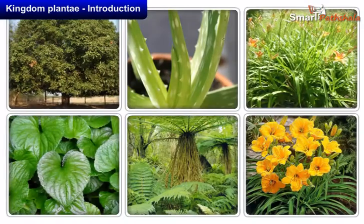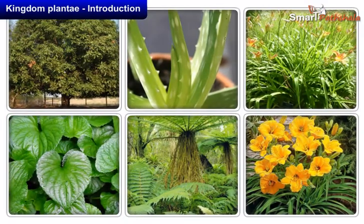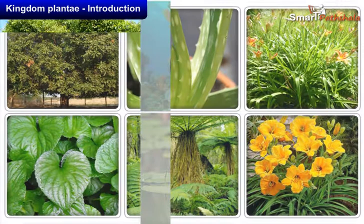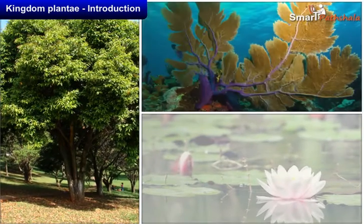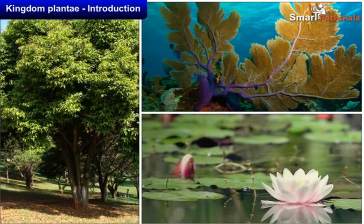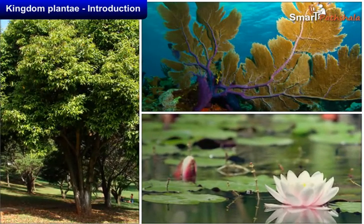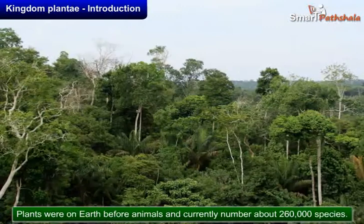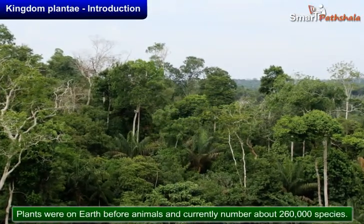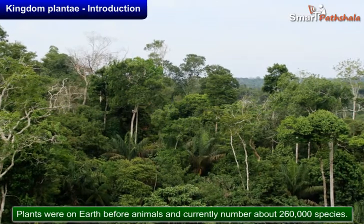In our earth, different types of plants are present. Plants are found on land, in oceans, and in freshwater. They have been on earth for millions of years. Plants were on earth before animals and currently number about 260,000 species.